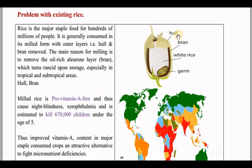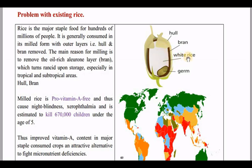The hull and bran layers are removed during the milling process. The brown bran layer is rich in oil, and because it is not easily digestible and cannot be stored for long, we remove it. This is why the rice we consume is white rice — it is only the carbohydrate-rich endosperm, with the bran removed.